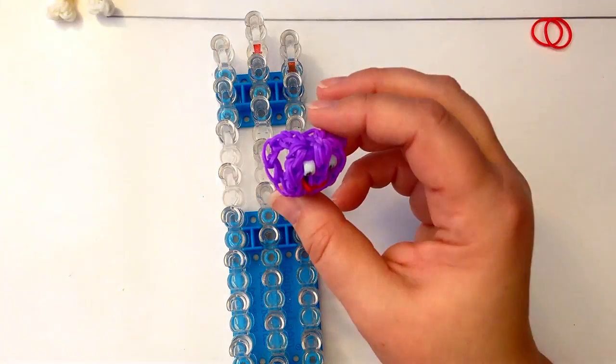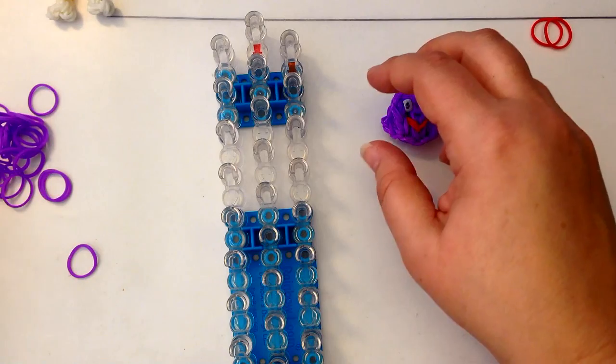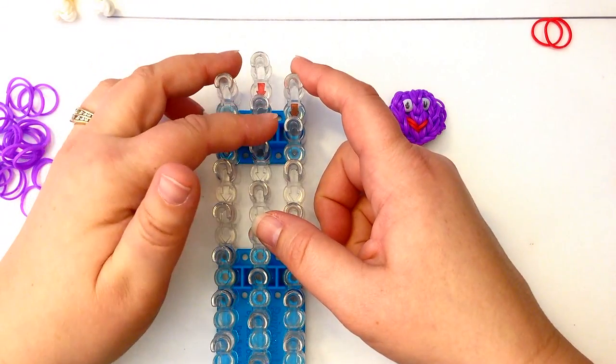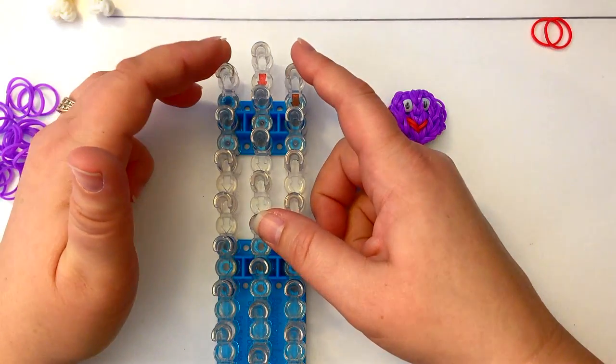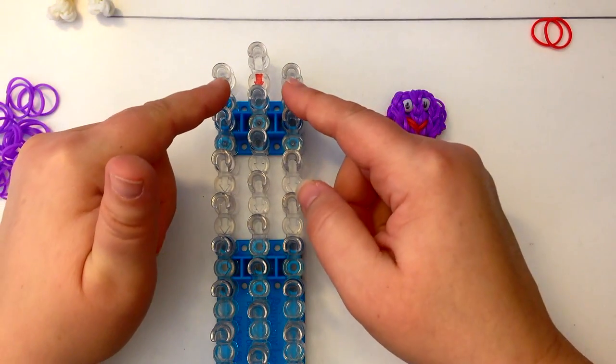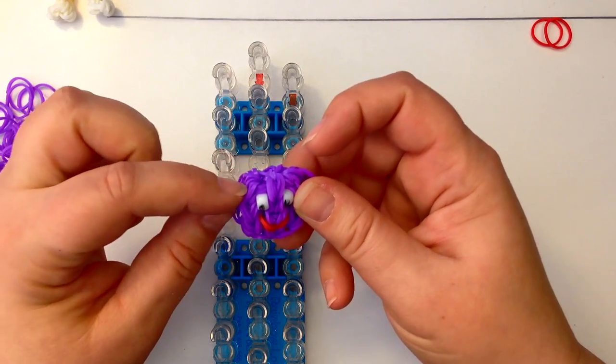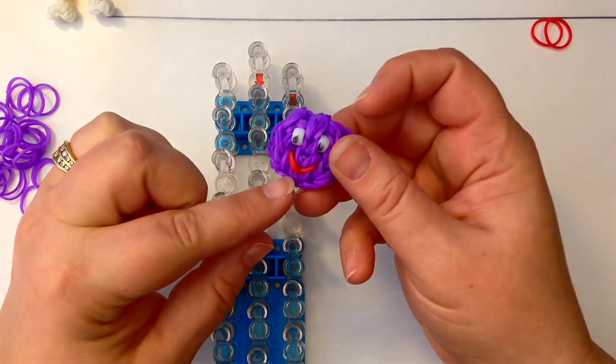We're going to use our purple bands first, with our single loom in the offset configuration. So column one and three are lower than column two. The arrow is pointing towards us, or if you don't have an arrow, the open part of the peg. And we're going to be coming down one, two, three, four and five.